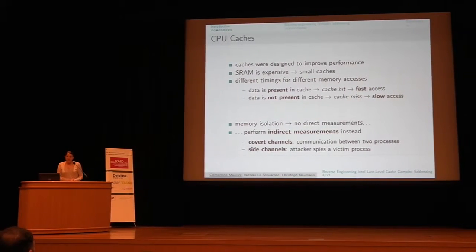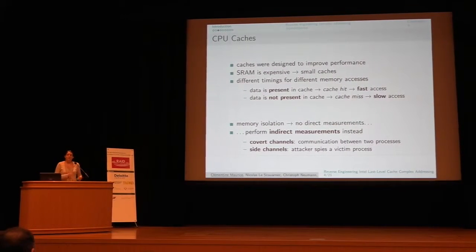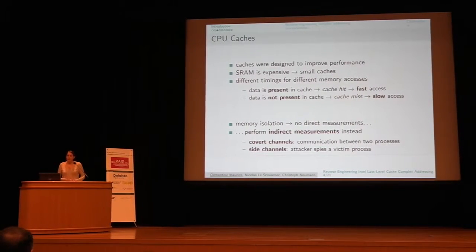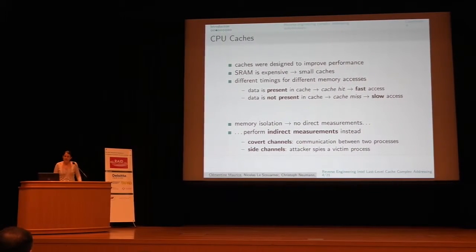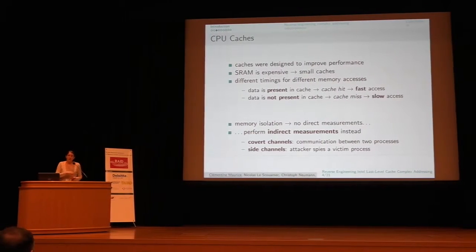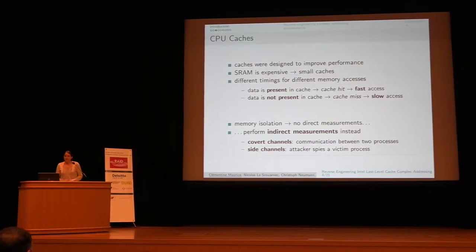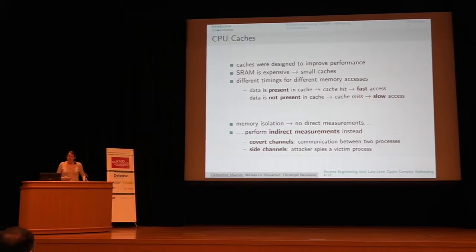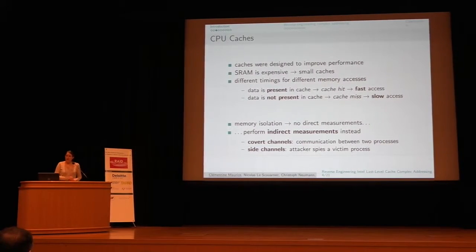More on CPU caches: caches are designed to improve performance. They are a type of memory called SRAM that is very fast but also very expensive, so we have small caches — a few megabytes. Because they are very small, not all your data can fit. So you have different timelines for different memory accesses. Either data is present in the cache — a cache hit, which is a fast access — or data is not present — a cache miss, which is a slow access.